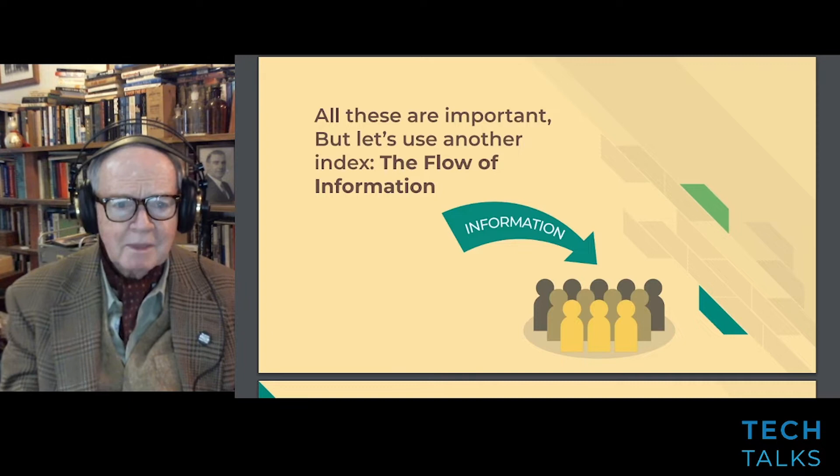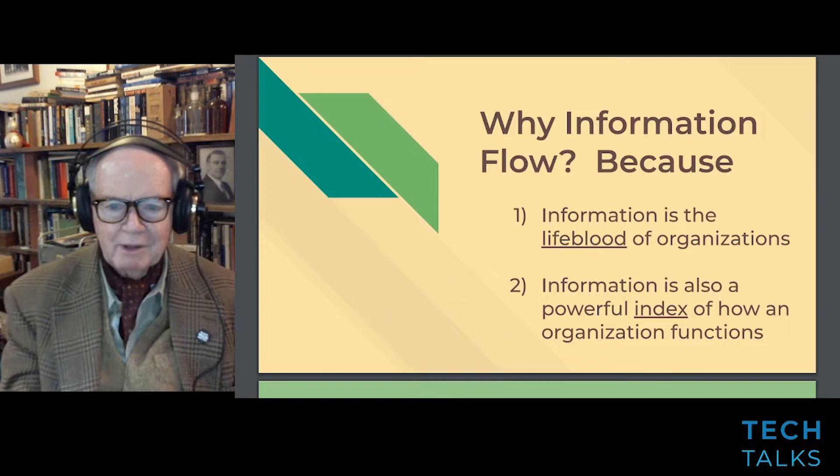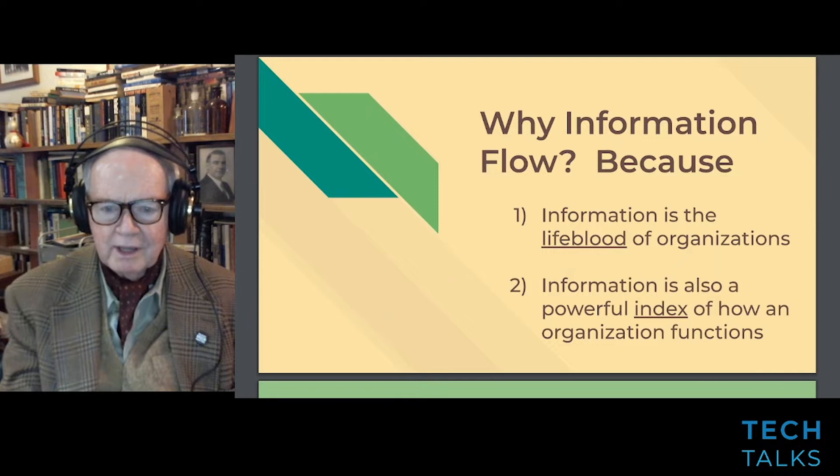While all these are important, let's use another index — the flow of information. Why do we pick information flow? Because information flow is the lifeblood of organizations. And second, information is a powerful index of how an organization functions. It predicts other things.